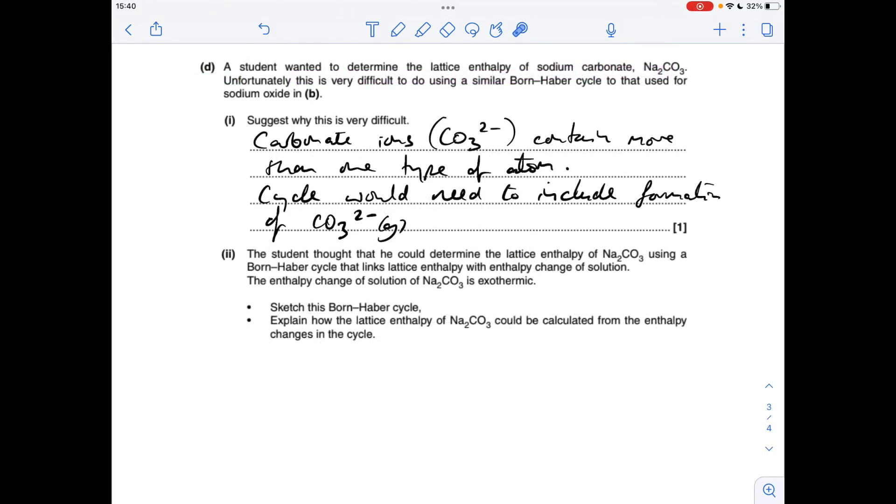First part of D is a little bit tricky I think. Why would it be difficult to determine the lattice enthalpy of sodium carbonate using a similar Born-Haber cycle? Well, it's all down to the fact that the carbonate ion contains more than one type of atom. So if you think about how the cycle would look, you would need to include the formation of a carbonate ion before you could then combine it with the gaseous sodium ion to make the lattice sodium carbonate, and obviously that's difficult.